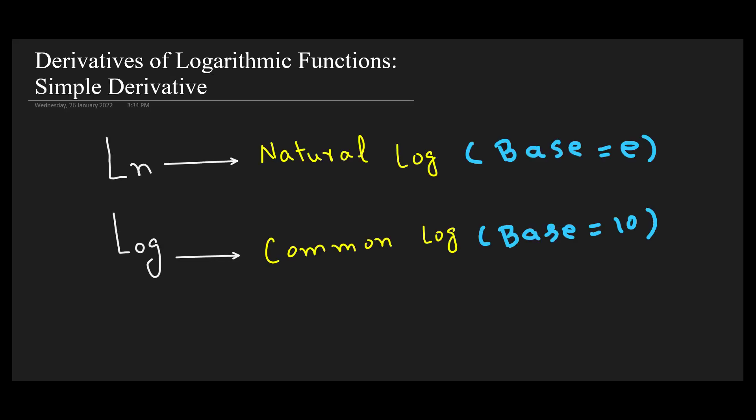In this video we are going to cover the derivative of logarithmic functions. Log can be of two types: natural log or common log. A natural log is one in which the base is e, which is a natural constant, and common log is one whose base is equal to 10. We will cover the derivative of both these types.